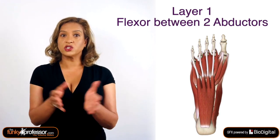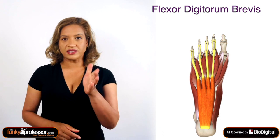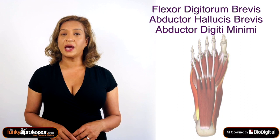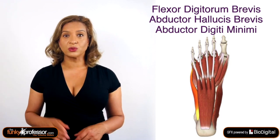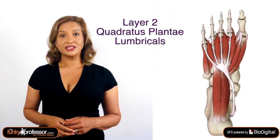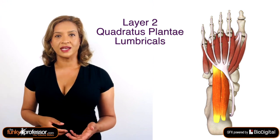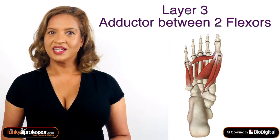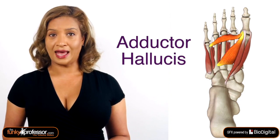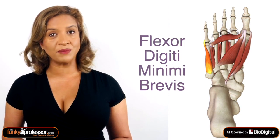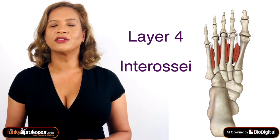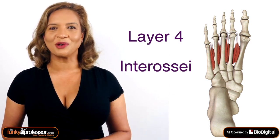There are 4 muscle layers in the sole of the foot. The first layer is a flexor between 2 abductors: flexor digitorum brevis in the middle, abductor hallucis going to the big toe, and abductor digiti minimi going towards the baby toe. The second layer is quadratus plantae and the lumbricals. The third layer is an adductor between 2 flexors: flexor hallucis brevis, adductor hallucis, and flexor digiti minimi brevis. The fourth layer contains the interossei muscles.